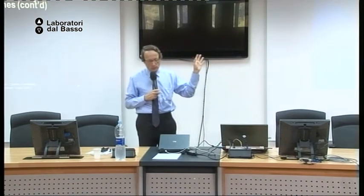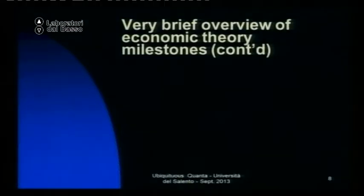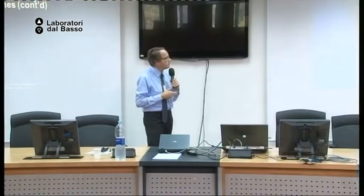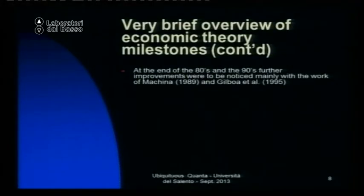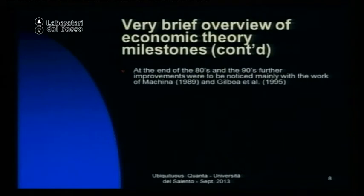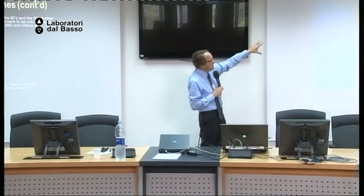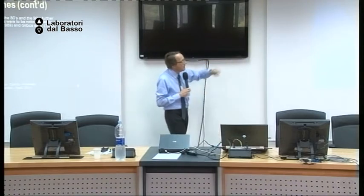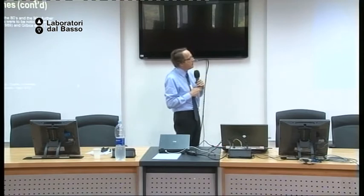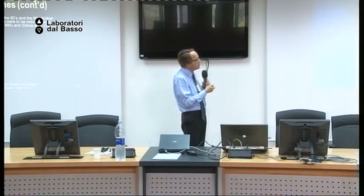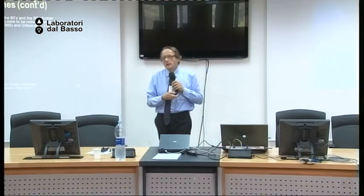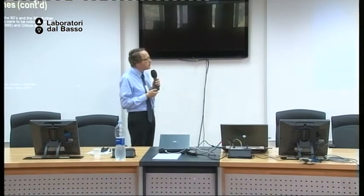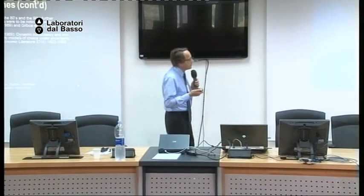The von Neumann-Morgenstern model is used heavily in applications in public finance, microeconomic theory, and also macroeconomics. What happened in the 80s and towards the 90s was that those paradoxes — the Allais and Ellsberg paradoxes — had been around, and the expected utility theories had to address some of them. That was done via the work of Machina, and also work by Gilboa and Schmeidler, who came up with very important alternatives in the literature to address those paradoxes.